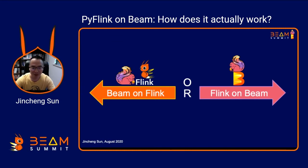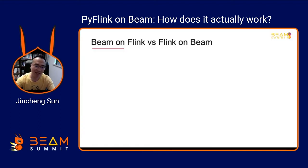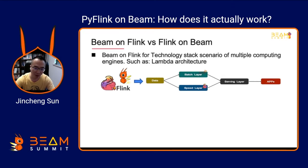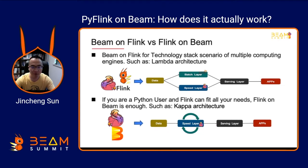Beam on Flink means users can use Beam API to write Flink jobs. So how do users choose between using the Beam API or Flink API? This decision has a lot to do with your company's existing technology, architecture, and specific business. For example, if your business involves multiple computing engines such as Spark for batch and Flink for streaming, the Beam API is your best choice. But if Flink can solve all of your business needs and you only want to choose the development language, then using the Flink API is enough.